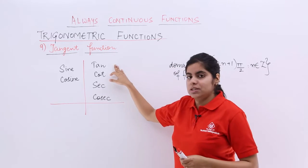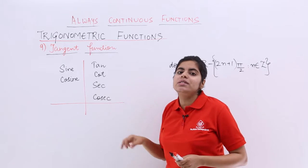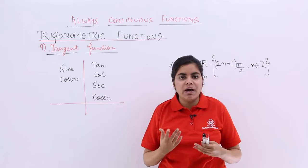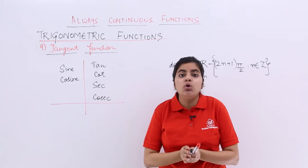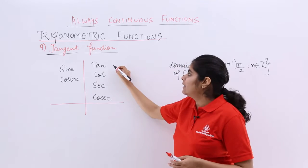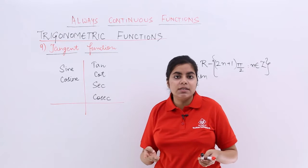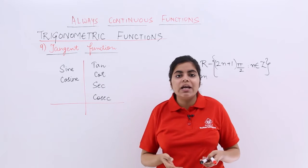But these functions like tan, like cot, like secant, like cosecant, these all four functions are somewhere or the other not defined in their domain. That means like tan, what is the value of tan 90? It is 1 by 0, not defined. What is the value of cot 0? It is again not defined.